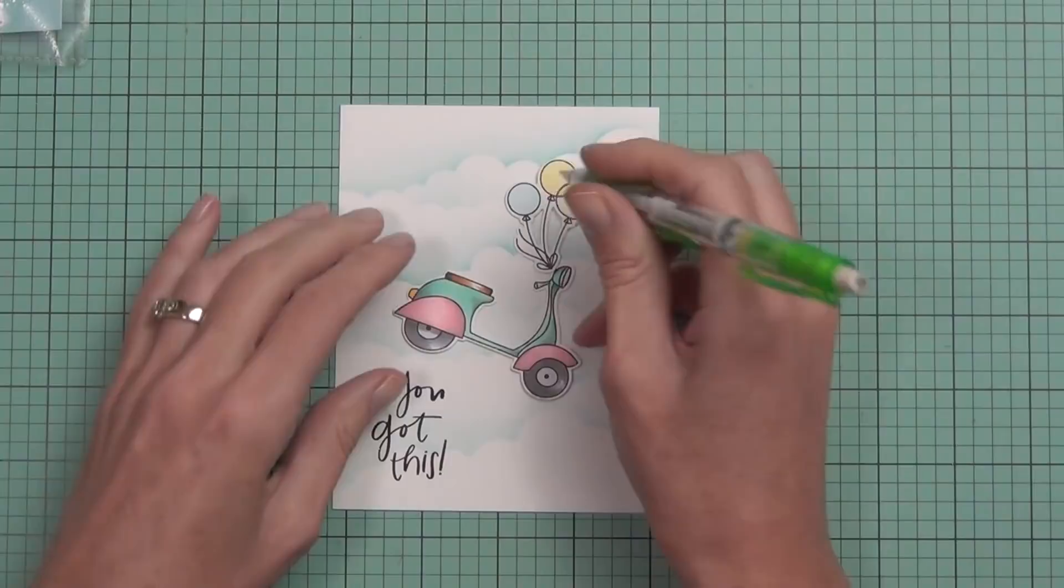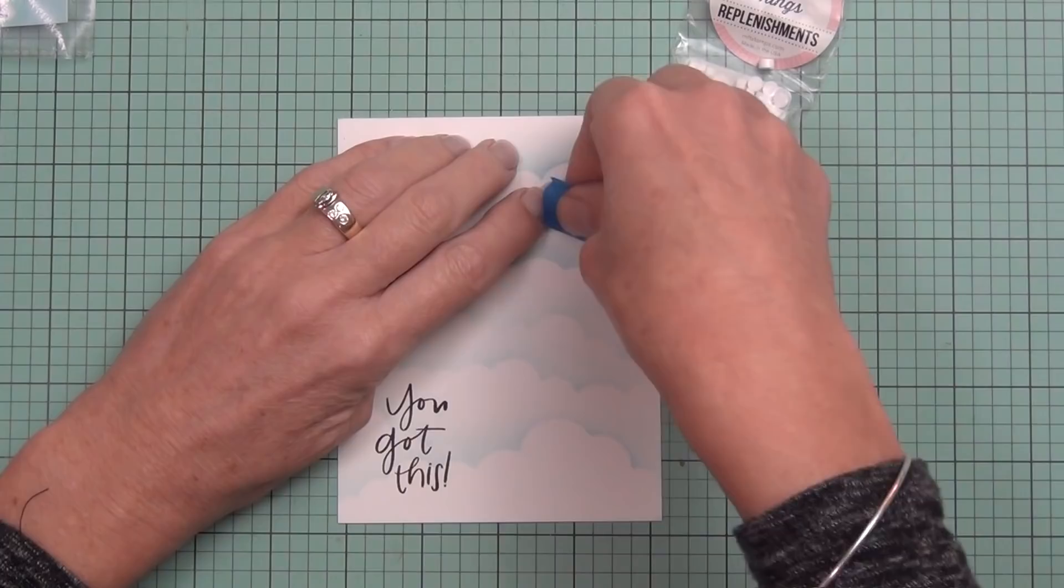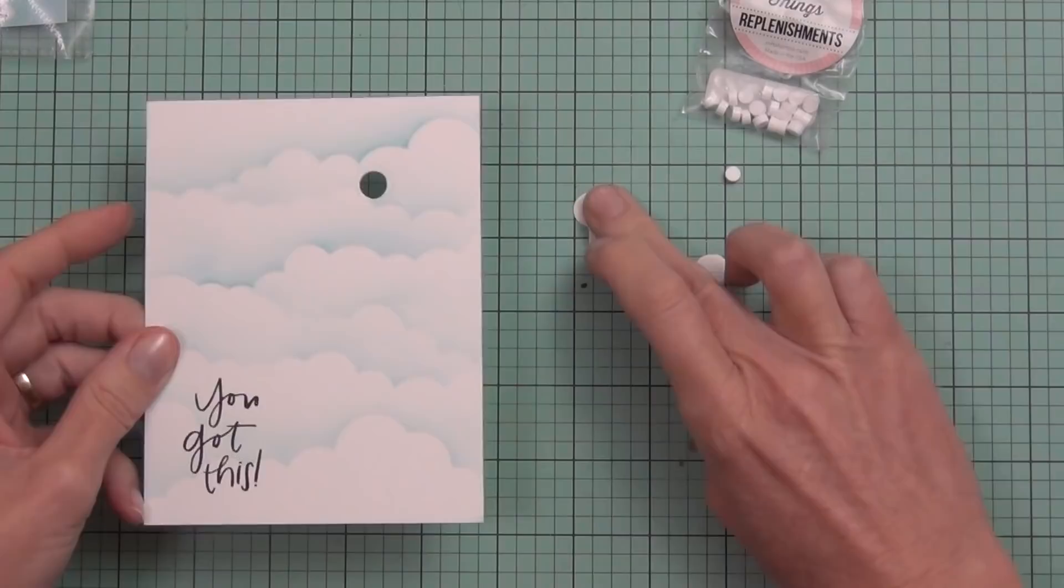I'm going to make my swinging element now. To work out where I want it, I've held my image in place, which I've joined together with some matte medium, made a mark with a pencil, and I'm going to die cut a very small circle.